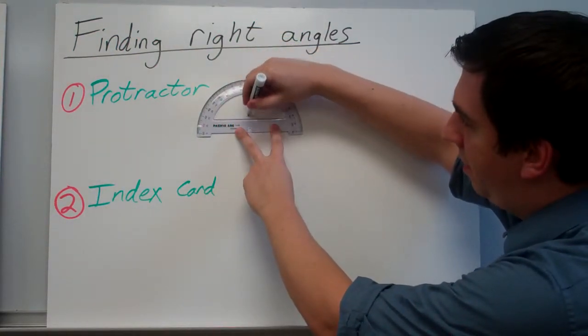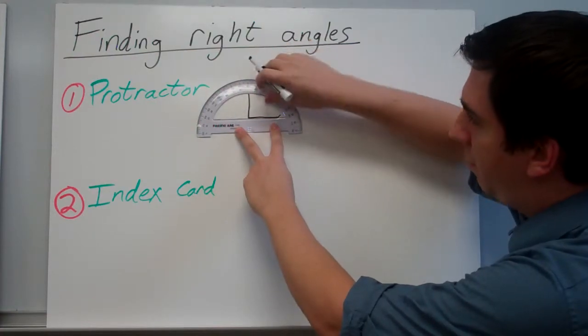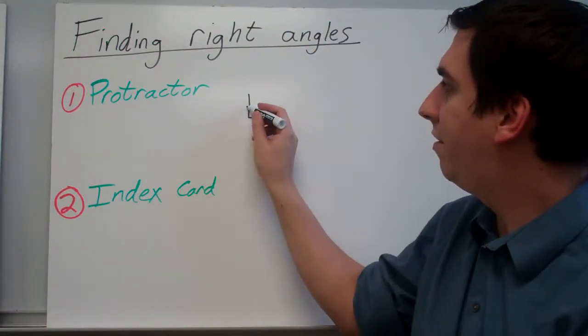So I can say, okay, here's 90. And go straight across. And then we have our 90 degree angle right here.